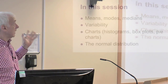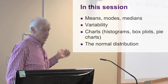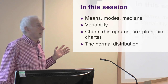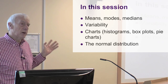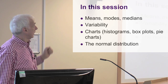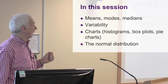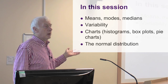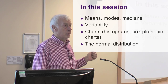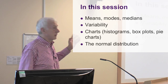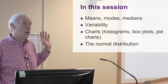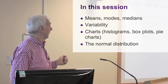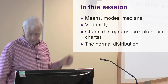Briefly, this is what I'm going to cover. I'm going to talk about means, modes, and medians, and you may be familiar with some of these terms already. Variability, which is a slightly different concept from the central tendency of means, modes, and medians. I'll look at one or two charts, particularly as they bear upon looking at things like the distribution of variables. And to end with, I'll talk about one particular kind of distribution, the normal distribution, or sometimes called the Gaussian distribution. So that's what I'm going to cover today.